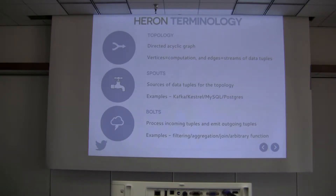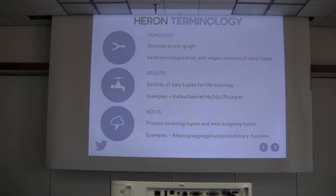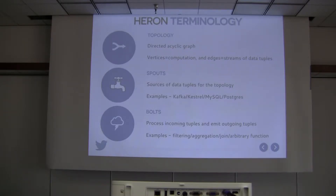Within Twitter, we use the notion of a firehose where we get all the Twitter data coming into the system, and we have a spout that reads from that. The second type of vertex is called bolts, which represent the actual computation. They take incoming tuples, transform the data, and emit outgoing tuples. Examples of processing include filtering, aggregations, stream joins, table joins, microservice joins, and even arbitrary functions like machine learning — clustering, linear regression, or association algorithms.